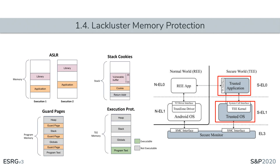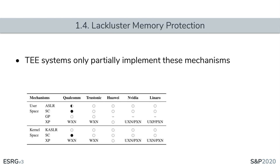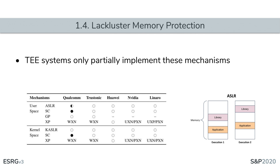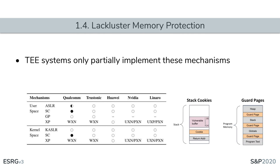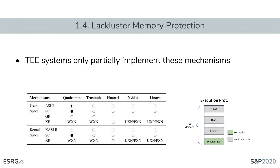The next architectural issue is a lackluster implementation of memory protection mechanisms. This problem is mainly present in trusted OSes and trusted applications and facilitates the exploitation of other vulnerabilities. Modern OSes employ mechanisms such as address space layout randomization, stack canaries, page guards, and execution protection. We found that TE systems only partially implement these measures. ASLR makes attacking loadable code harder; stack cookies and page guards protect against buffer overflows; execution protection prevents writable memory pages from being executable.